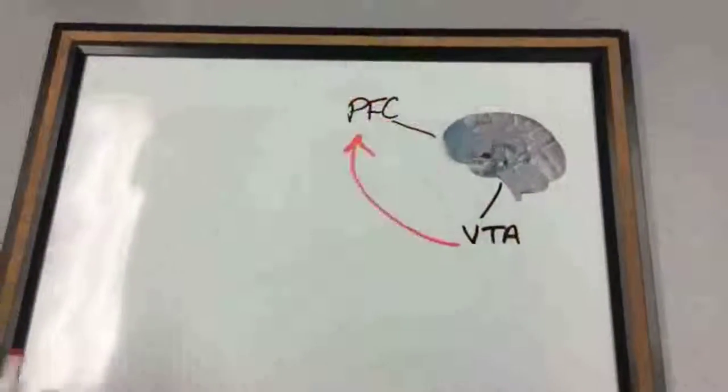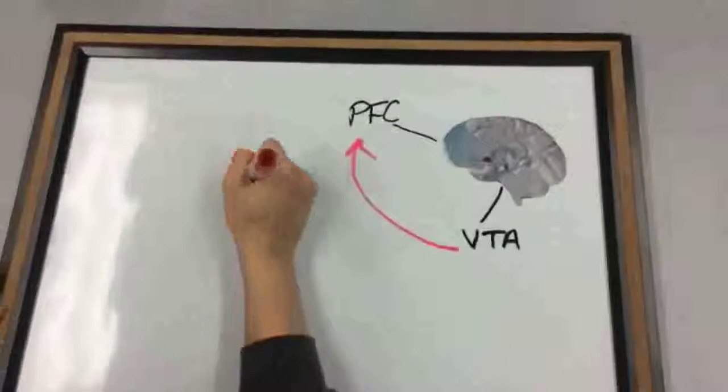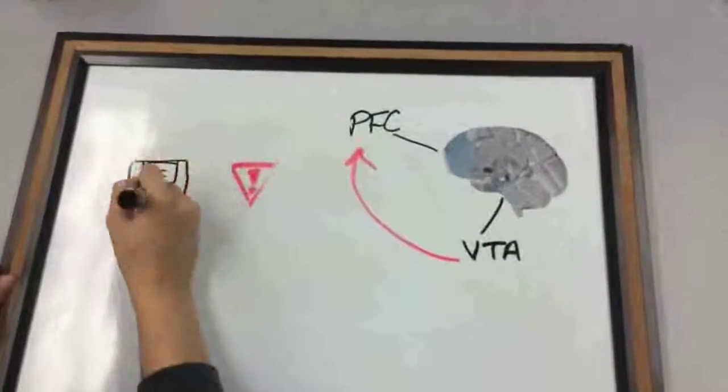In addition, the VTA connects with a part of the brain that controls a wide range of cognitive functions, like attention and working memory, called the prefrontal cortex.